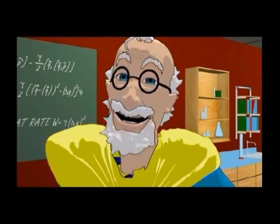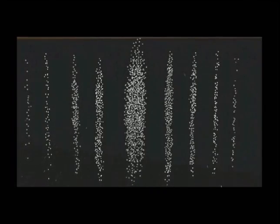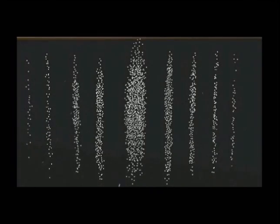We fired electrons, tiny bits of matter, through. But we get a pattern like waves, not like little marbles. How? How could pieces of matter create an interference pattern like a wave? It doesn't make sense.